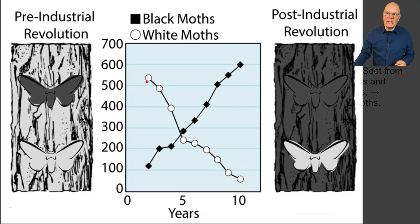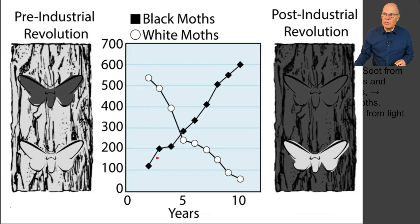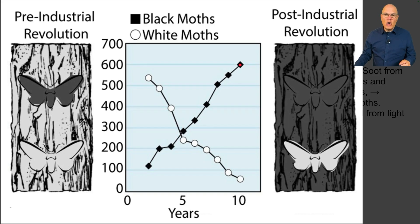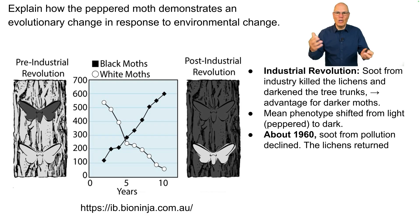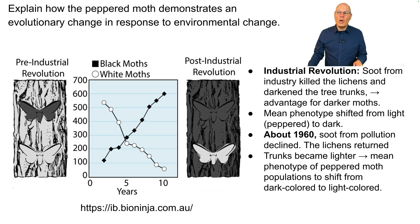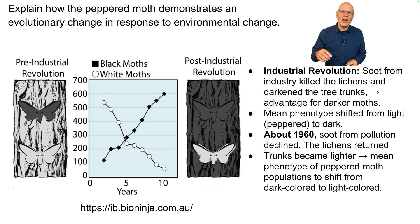At the beginning of the Industrial Revolution, most moths were light-colored and only a few were dark. As the Industrial Revolution proceeded, the mean phenotype shifted from light to dark until, at the depths of the Industrial Revolution, the majority of the moths were dark colored. Interestingly, this process was also historically reversed: around 1960, pollution soot declined with laws like the Clean Air Act. The lichens returned, the trunks became lighter, and the mean phenotype of the peppered moth shifted back from dark to light.